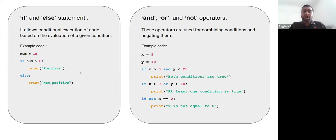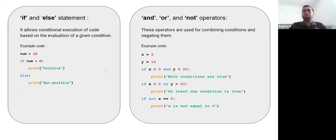We also have the and, or, and not operators that we can use to combine multiple logical conditions. So if you want to check both that x is greater than zero and that y is less than 20, we can do that using the and operator.